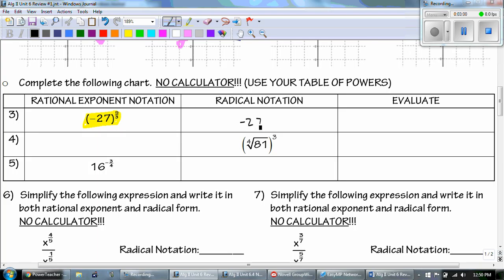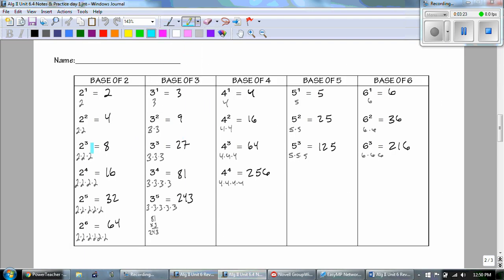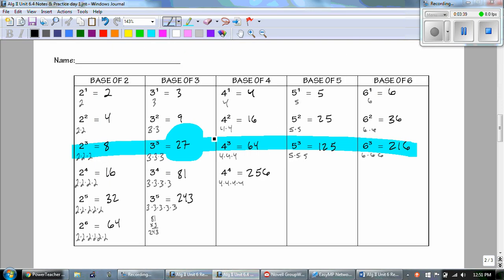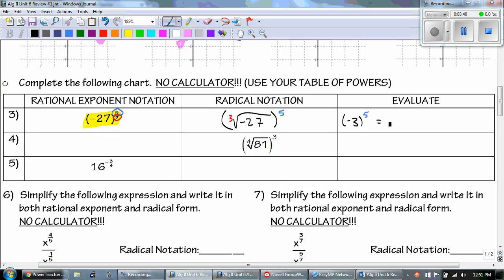The negative 27 stays the same, but then we rewrite it with 3 being my root, because it's the part that's underneath, and then the 5 goes on top, because that's my exponent. As I'm looking at this, I go to cubed root. The cubed root of 27 is 3, and since it's negative, it's going to be a negative 3. So now we have negative 3 to the 5th power. 3 to the 5th power is 243, except since it's negative, it's going to be a negative 243. And this is my final answer.